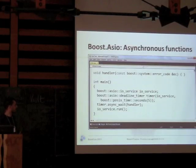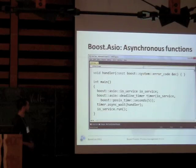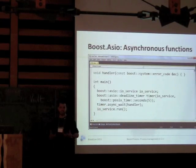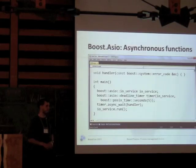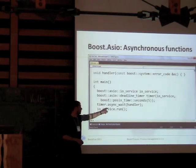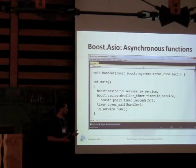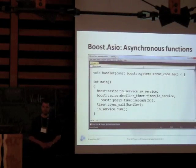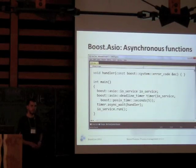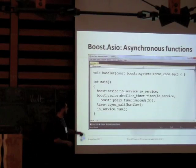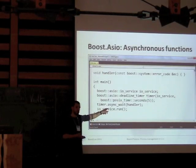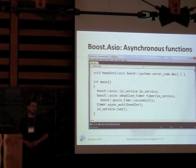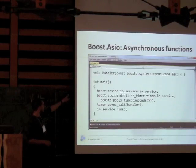Here we have a rather simple program that uses Boost.Asio with a deadline timer — a class from Boost.Asio we can use. We can call a function called async_wait. The idea is that we want to wait five seconds, and after five seconds we want to be notified that the time has expired and then do something. The trick with asynchronous functions is that async_wait does not block for five seconds; it returns immediately, so we can do something else until the five seconds expire and the handler function is called.